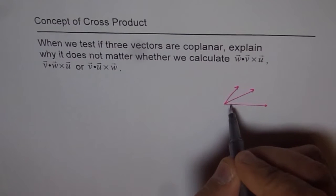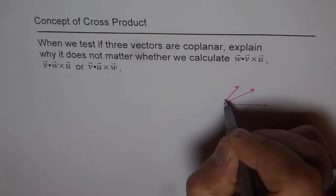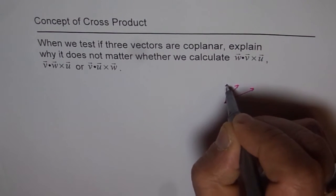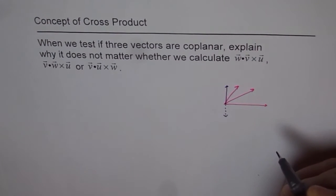Now, the cross product of any two will yield a vector which is normal to this page. It could be like this or it could be like this depending on the order.